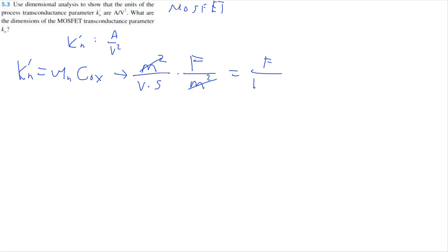So we're left with farad per volt times second. I'll try to make another volt out of this. So I do know that farad has the same unit as coulomb per volt. So we can do coulomb per volt divided by volt seconds.